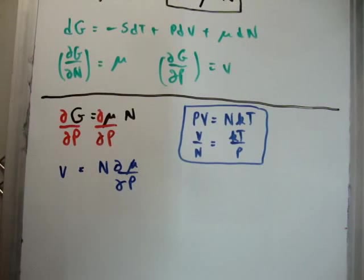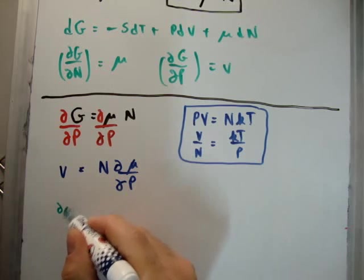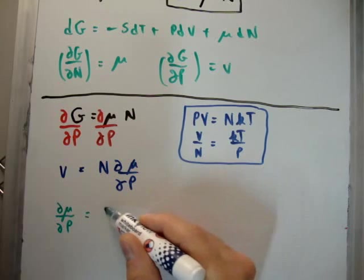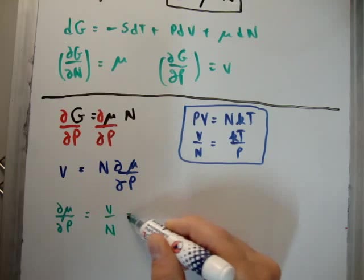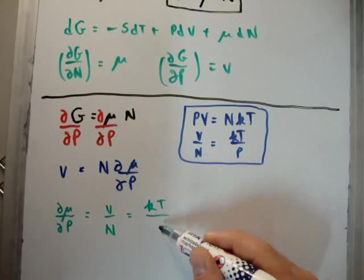That means that we can rewrite what we have at the moment as the following: (∂μ/∂P) is going to be equal to V over N, is going to be equal to K times T over P.